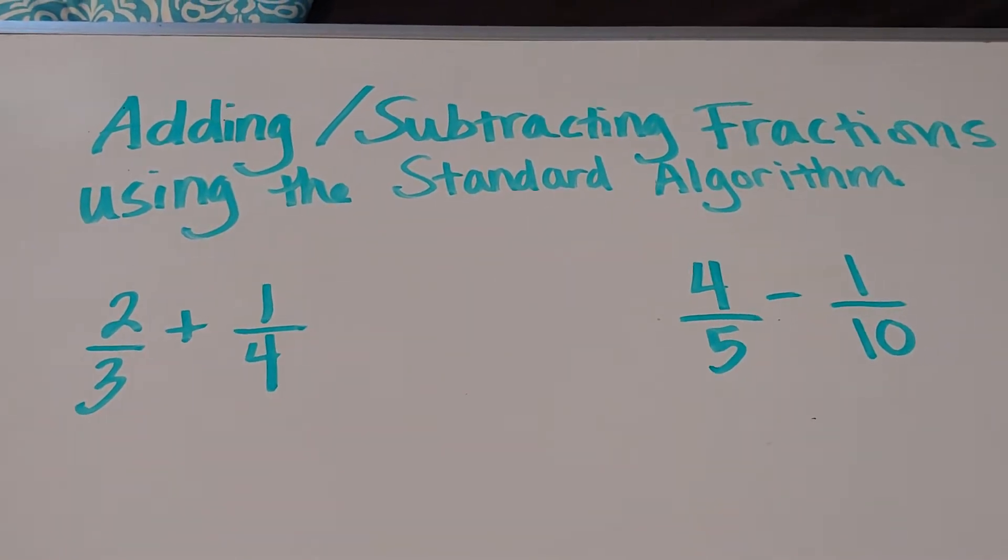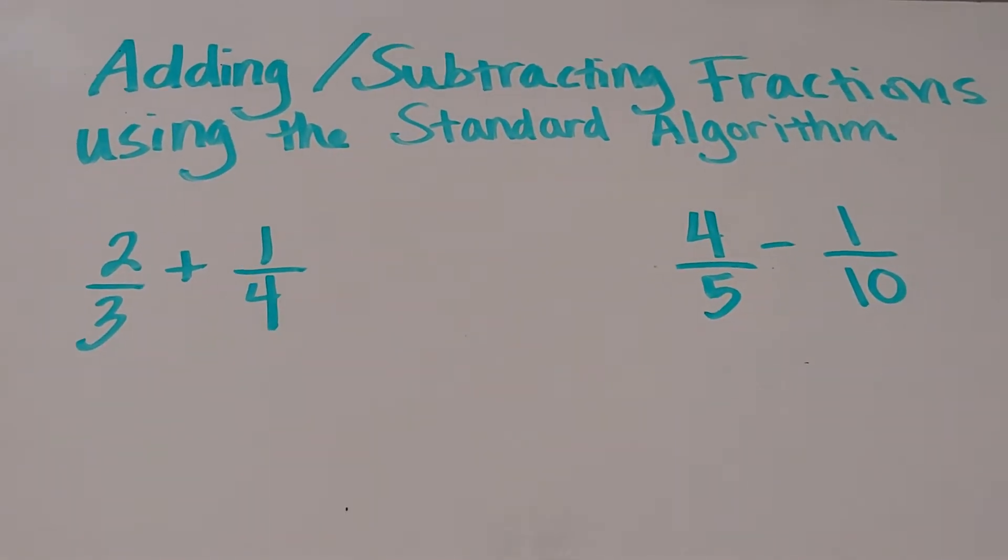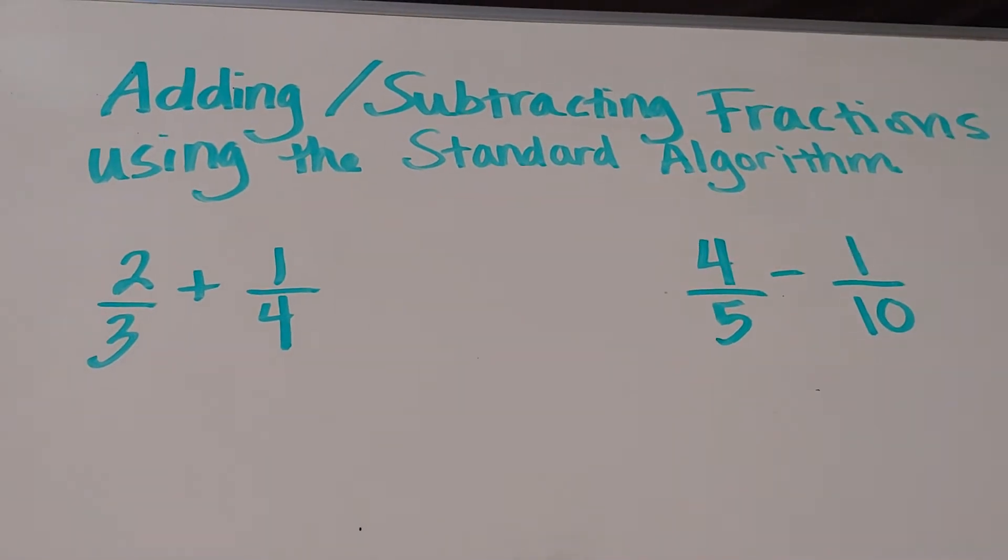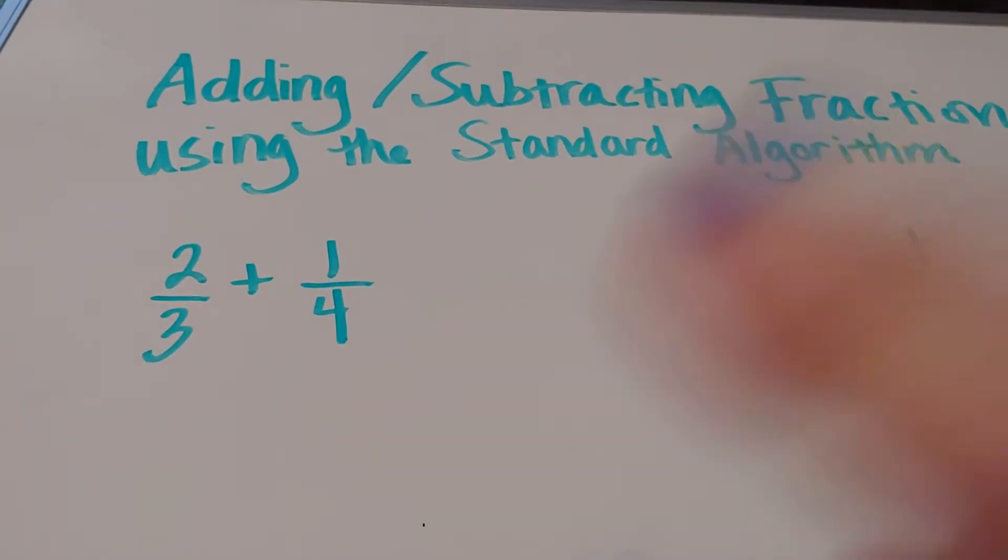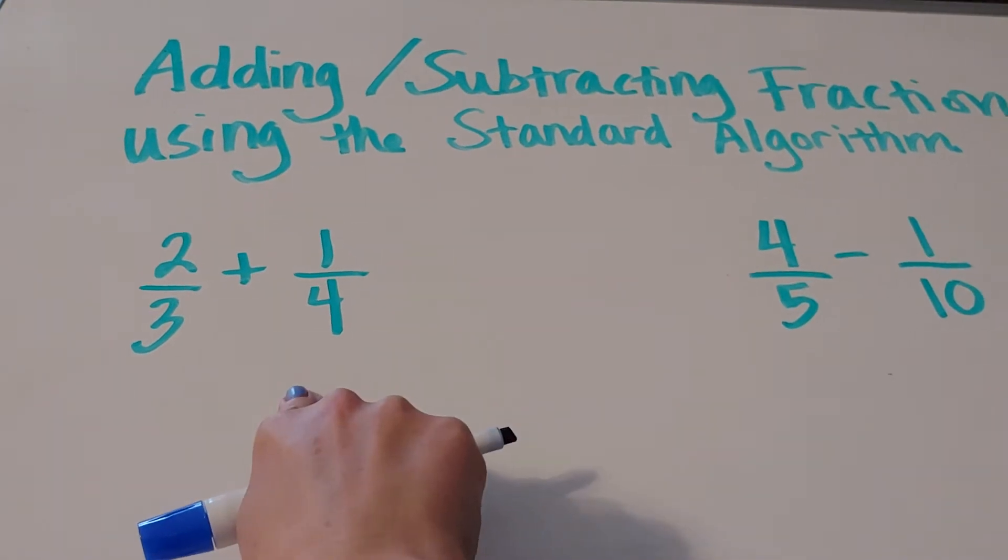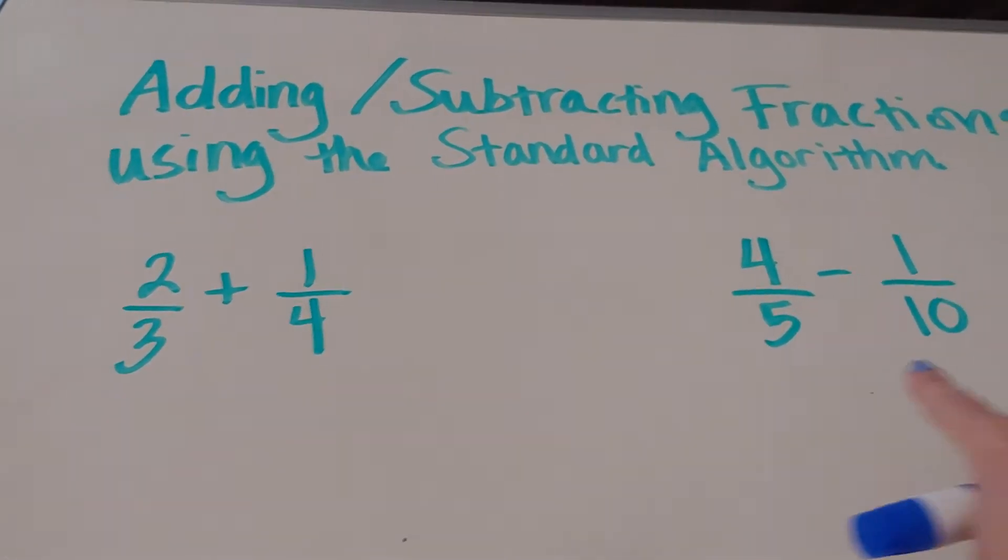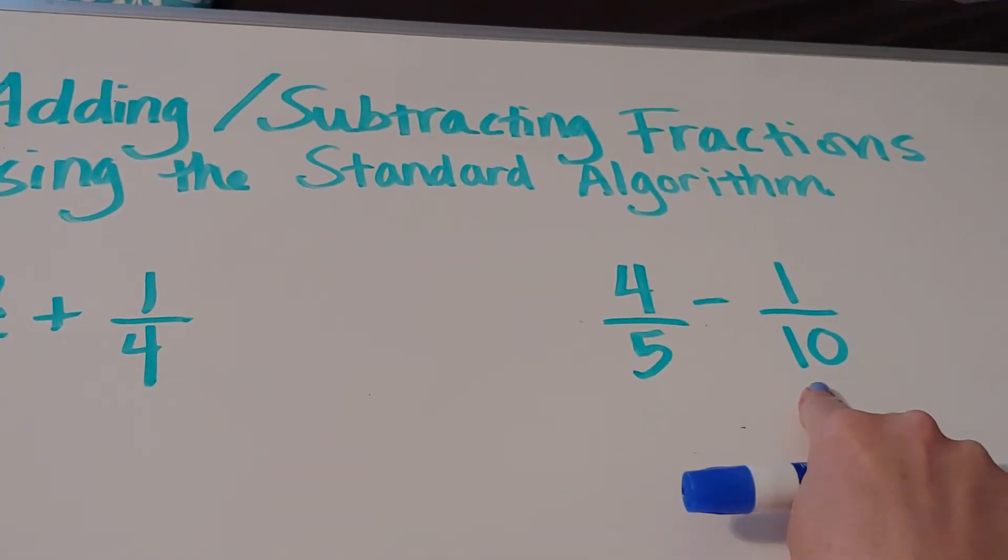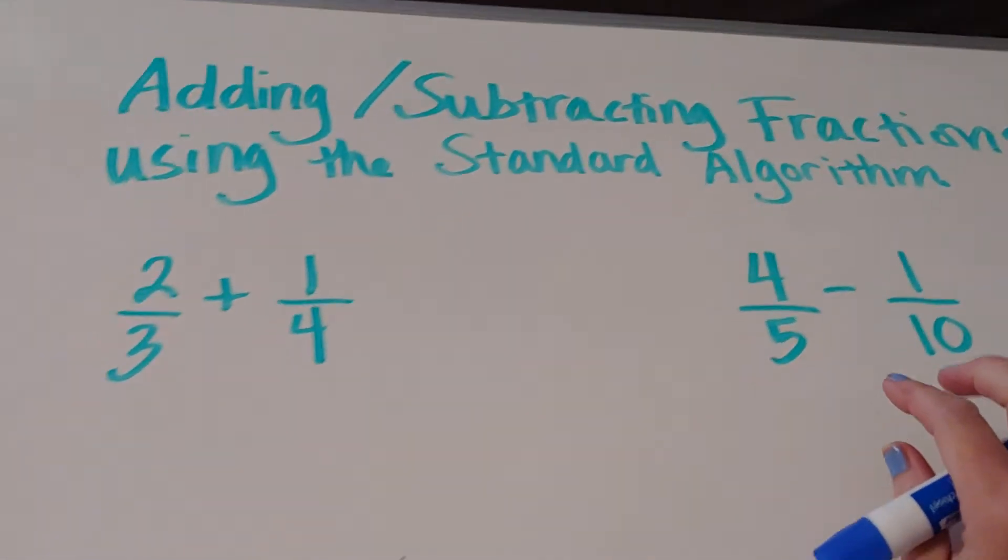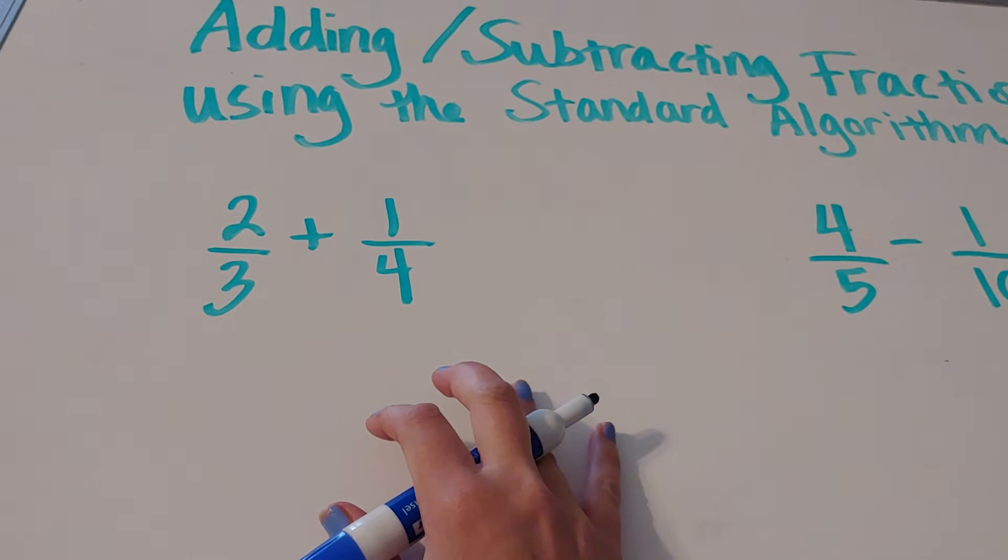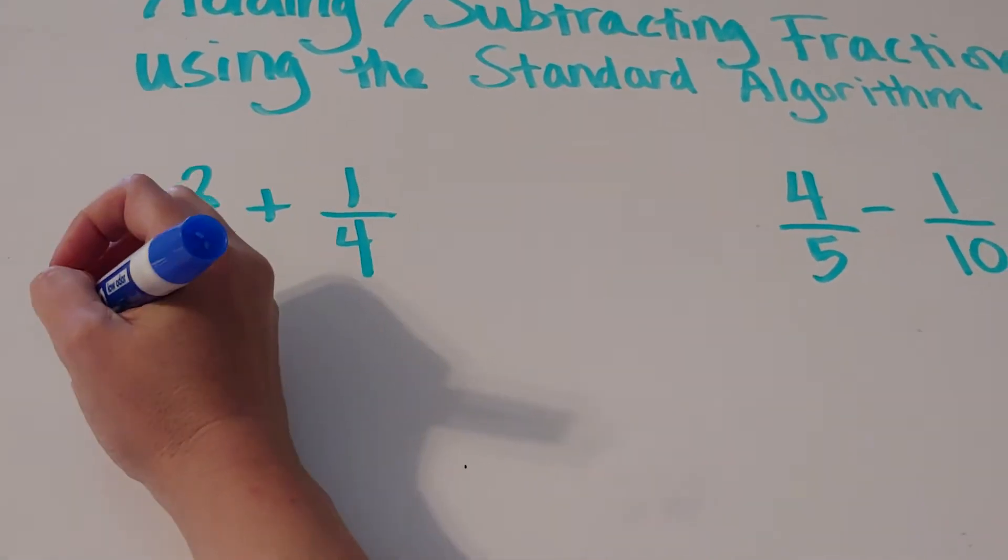Now, another name for the least common denominator is the LCM or least common multiple. And how it works is you don't want to just multiply 3 times 4 because that works in this instance, but it doesn't work in this instance. 5 times 10 is 50, which is way too big.